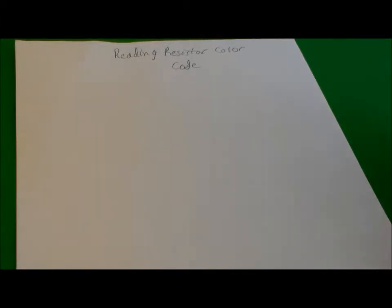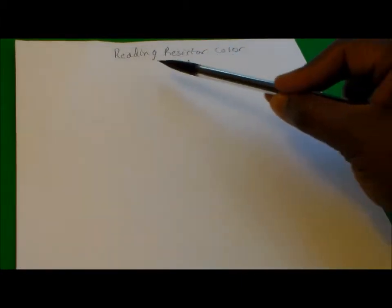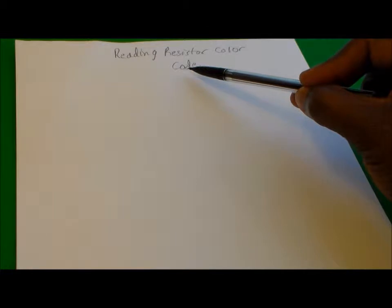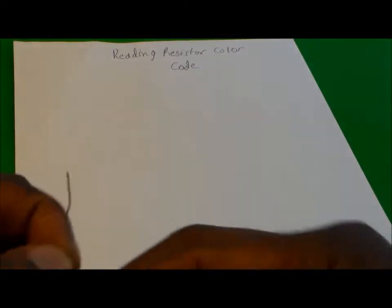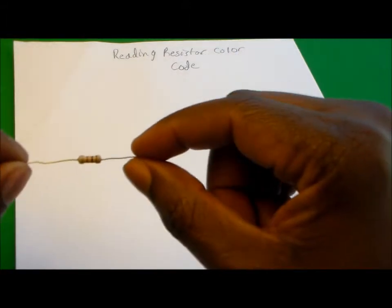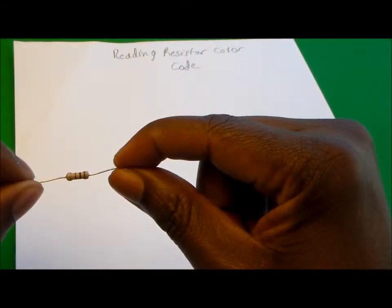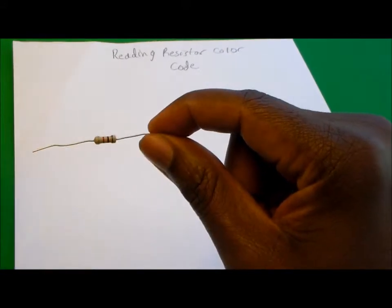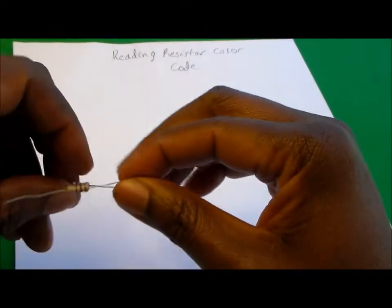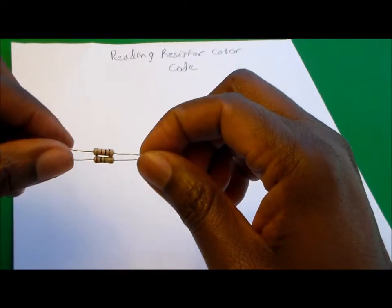In this video, we'll be looking at reading resistor color codes. Resistors are devices that impede the flow of current through a circuit, and this is an example of a resistor. These are just some examples with different packaging types.